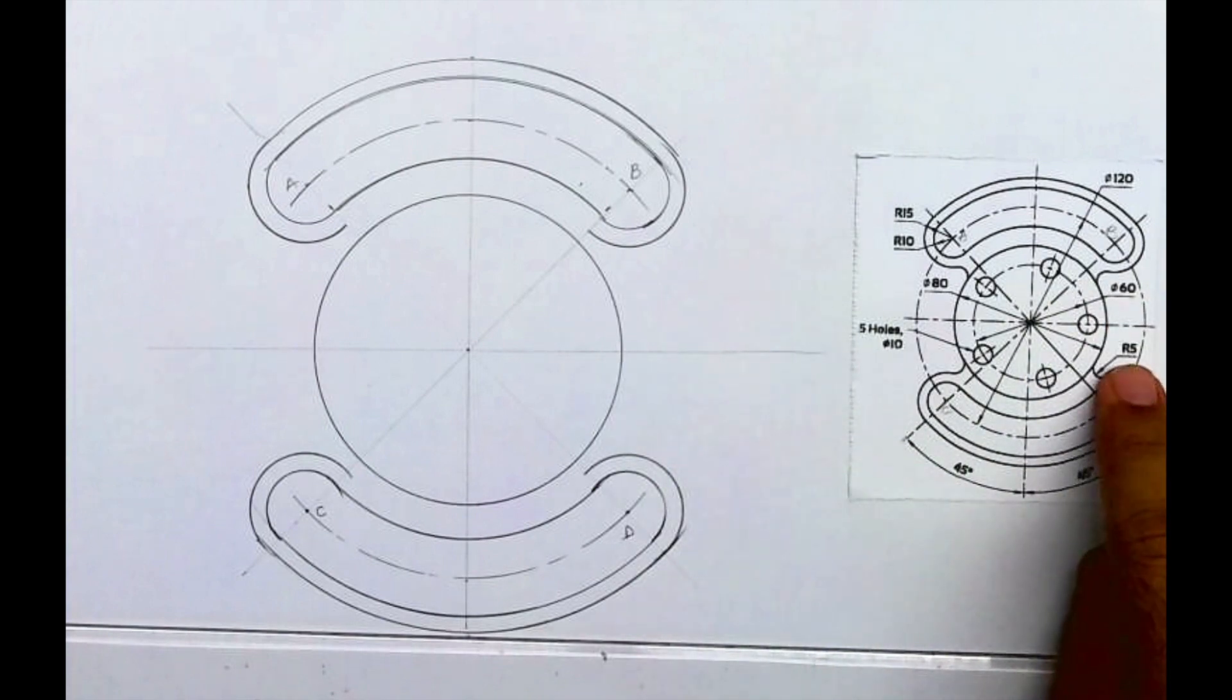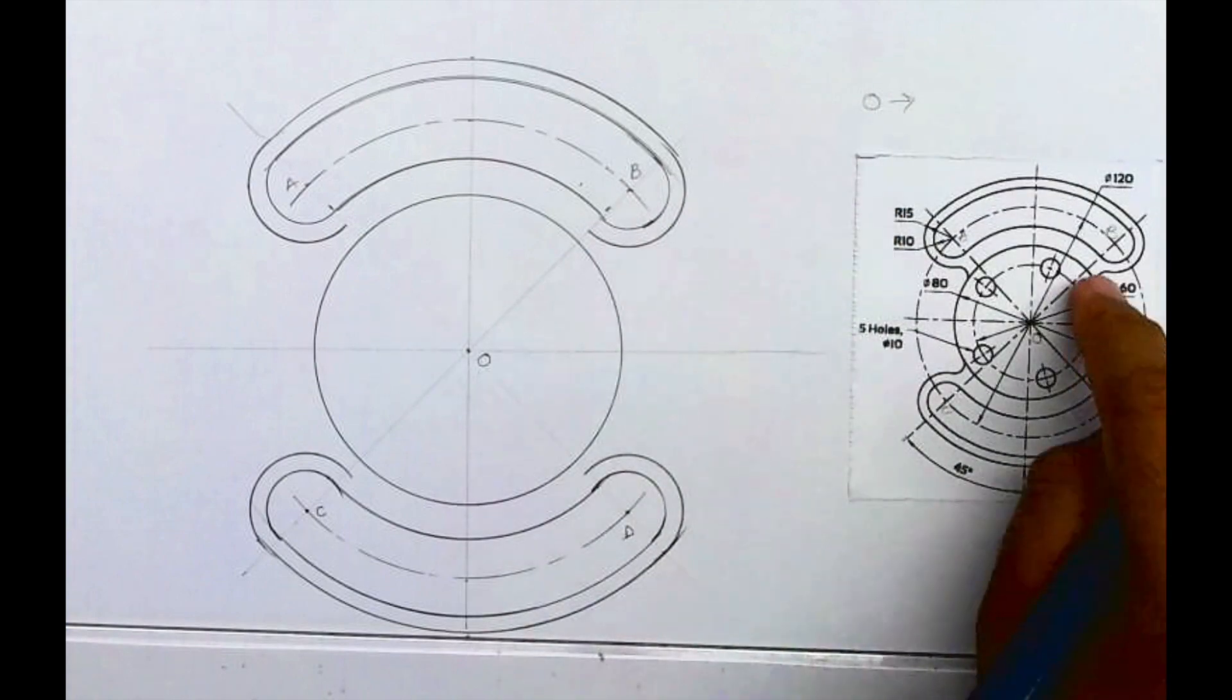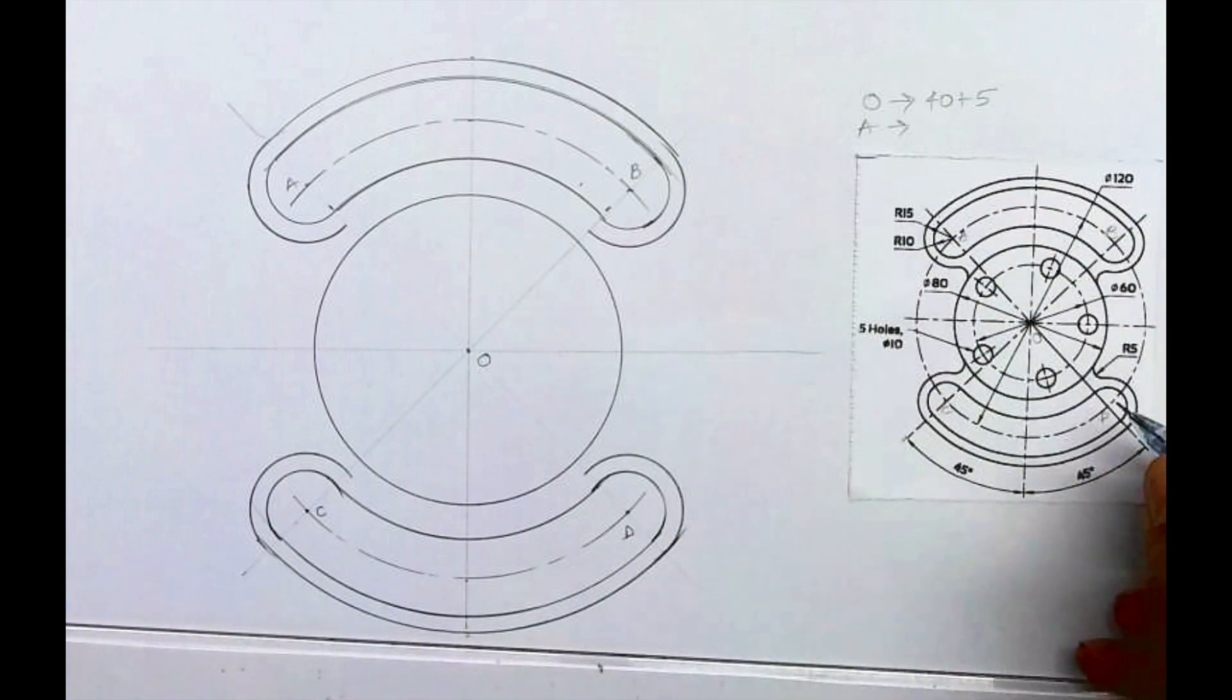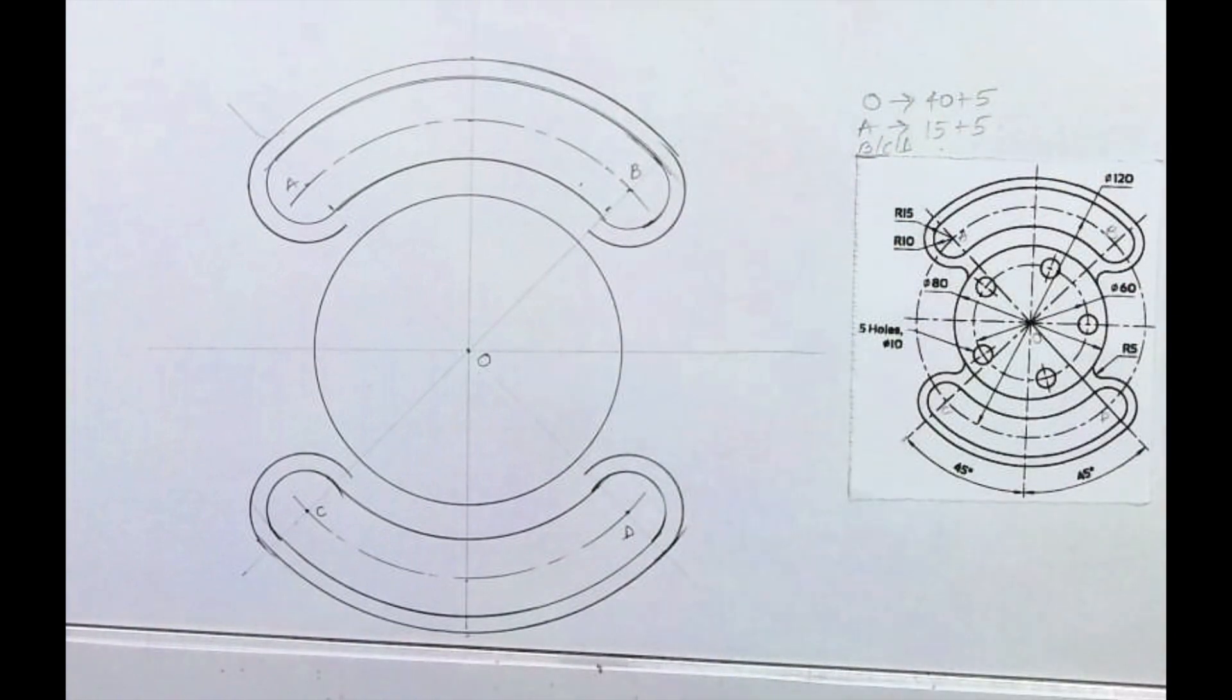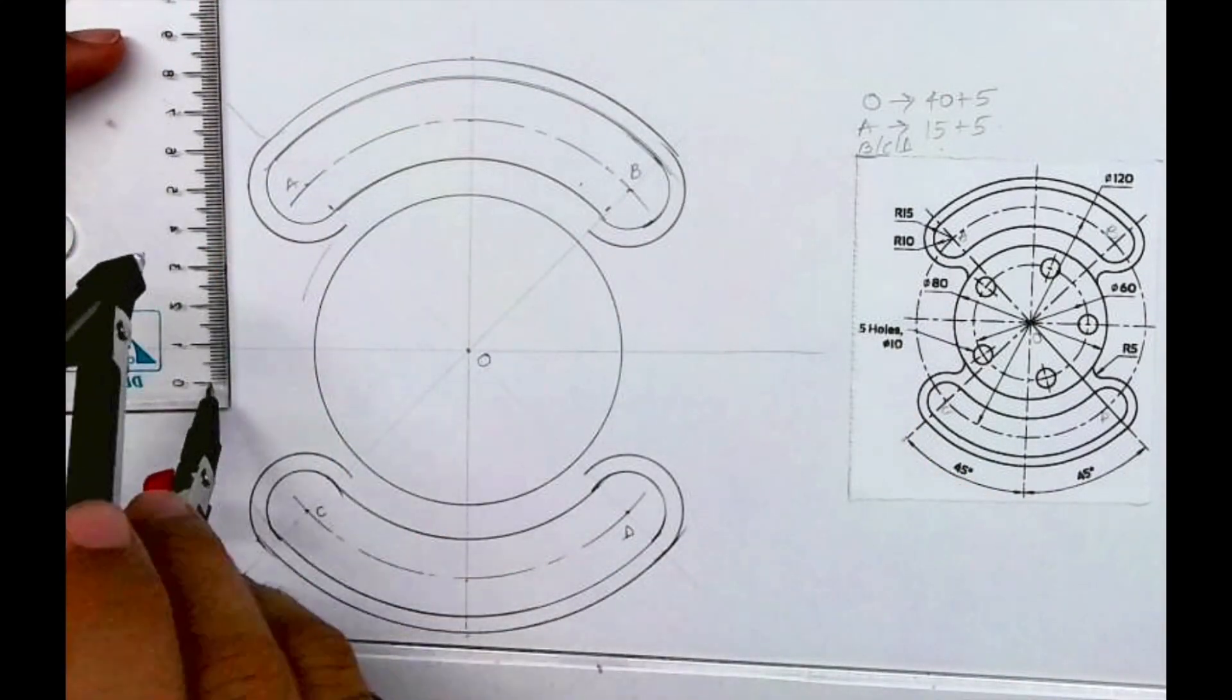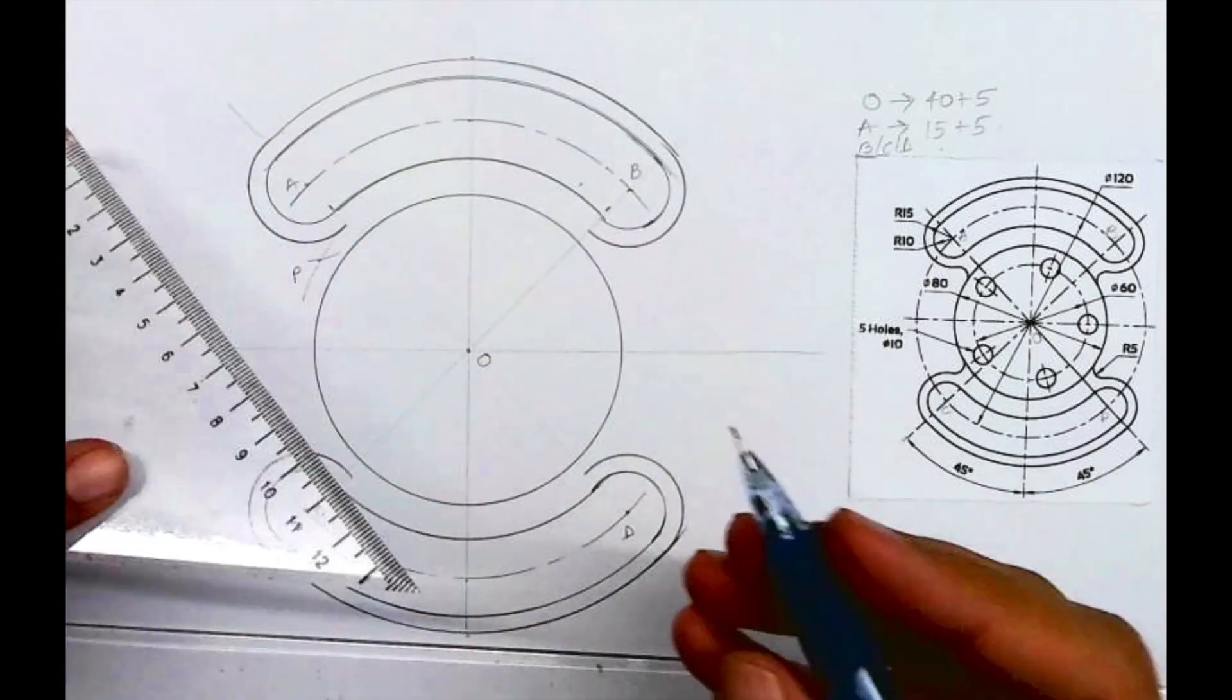After drawing this much, we have to draw radius 5. Let's take this point as O. From O I need to take 40 plus 5, because this diameter is 80, so it would be 45. And from point A I will cut 15 plus 5, same from B, C, and D also. From O I will cut 45 and from A I will cut 20. Wherever they intersect, from that point you can draw radius 5. Let's take this point as P.